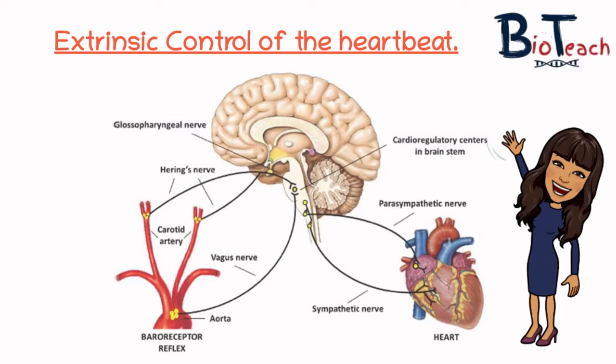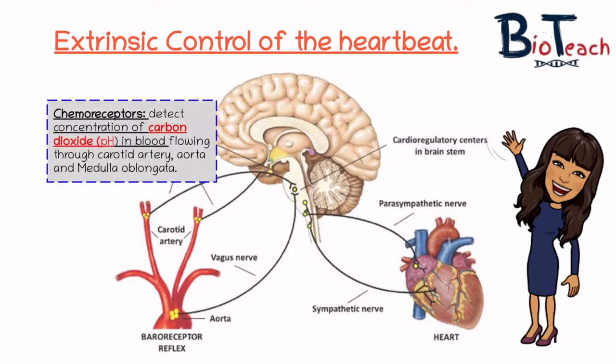There are two types of receptors to know about: chemoreceptors and baroreceptors. Chemoreceptors are sensitive to chemical changes. There are two patches of chemoreceptors in the walls of blood vessels, sensitive to the chemical composition of the blood. They are located in the aortic body of the aorta, just above the heart, and the carotid body in the wall of the carotid artery in the neck.